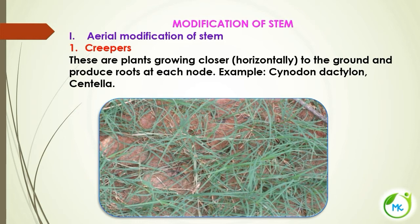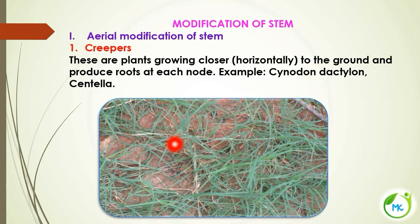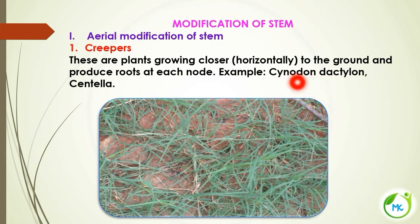First we are going to see about creepers. Creepers are plants growing closer to the ground. If they grow closer to the ground and produce roots at each node, then they are referred to as creepers. An example is Cynodon dactylon — it is nothing but common grass.